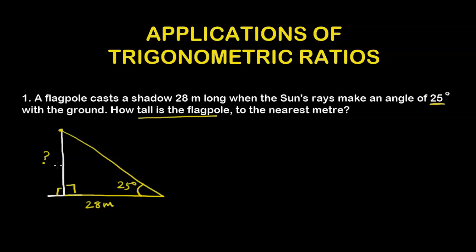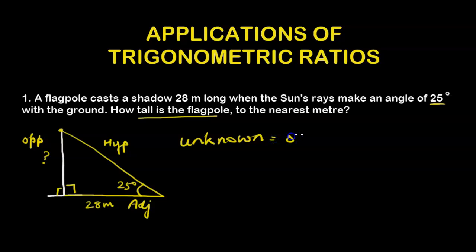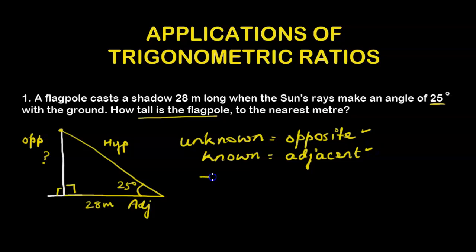Out of sine, cosine, and tan, which ratio is applicable depends on what we are given and what we are looking for relative to the given angle. For this angle, the flagpole side is opposite and the shadow side is adjacent. The hypotenuse is always opposite the 90-degree angle. Since the unknown is opposite and the known is adjacent, we use tan — opposite over adjacent — so we use the tan ratio.